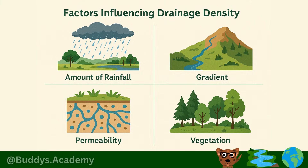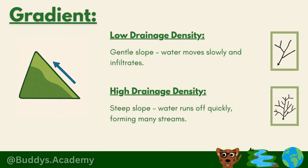Let's look at some factors that influence drainage density — there are actually nine factors. Starting with gradient: for low drainage density you need a gentle slope so water moves slowly and infiltrates, leading to less runoff and fewer streams. For high drainage density you need a steep slope so water runs off quickly and forms many streams. Imagine pouring water on a slide — the fast-moving water carves out more streams.